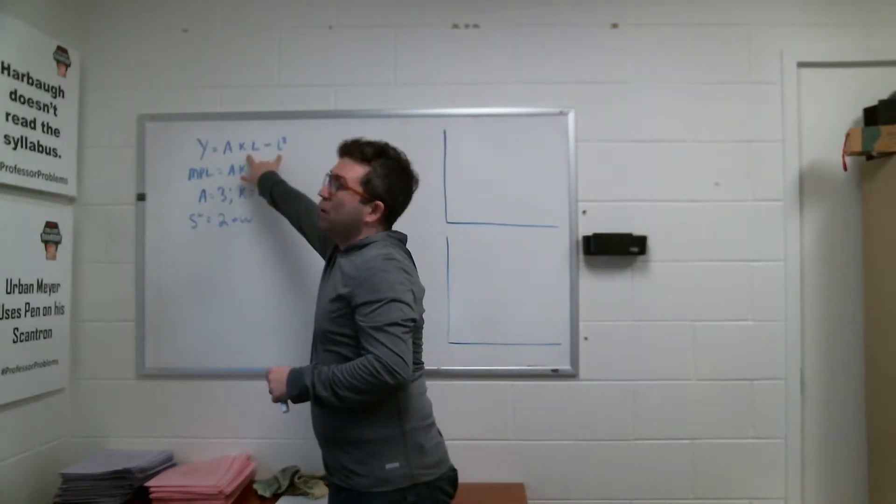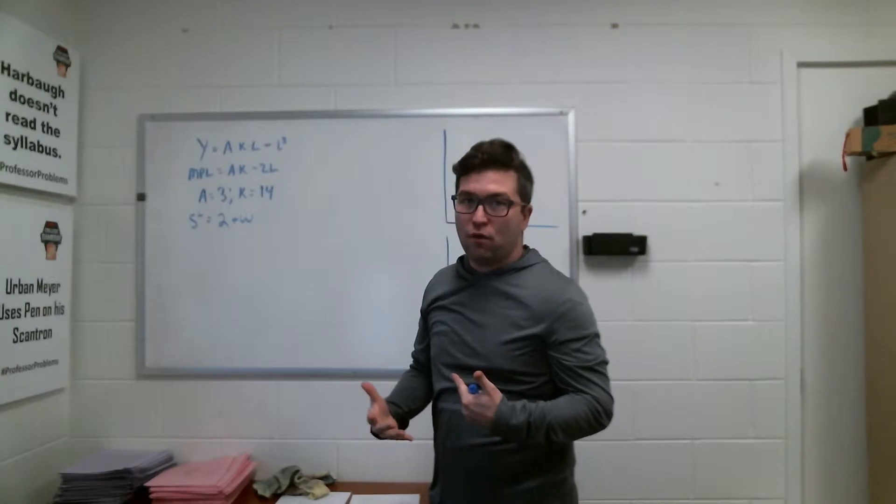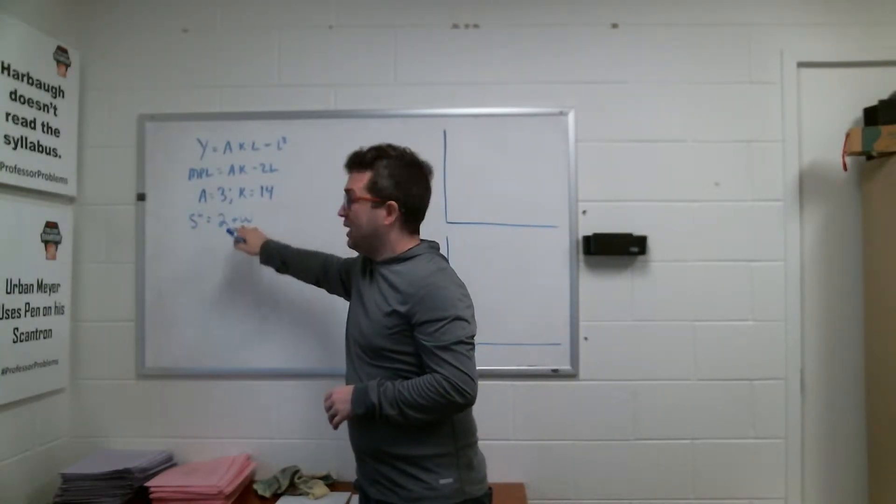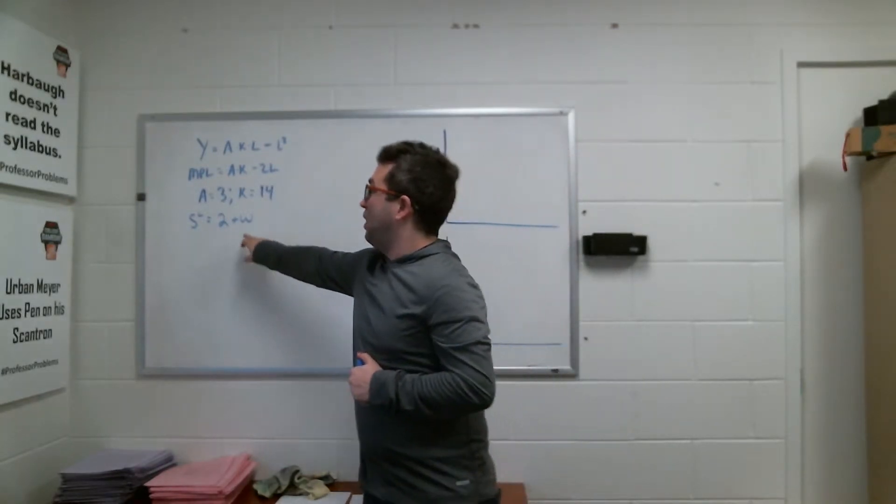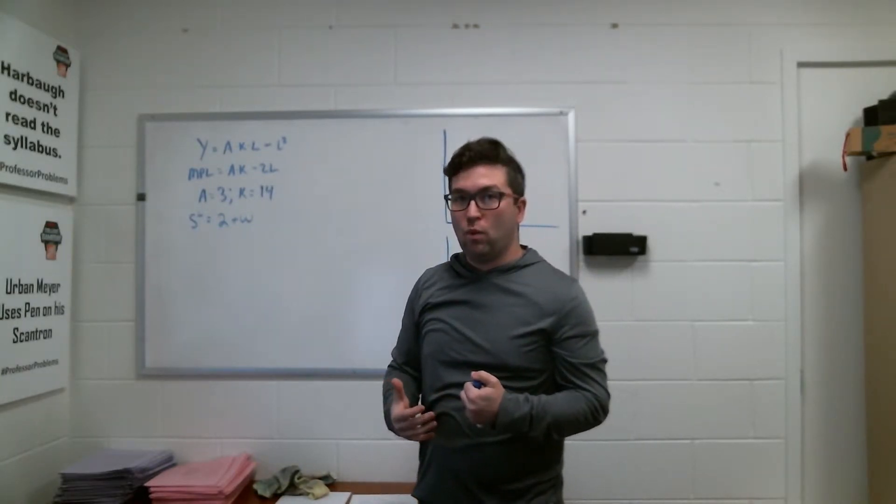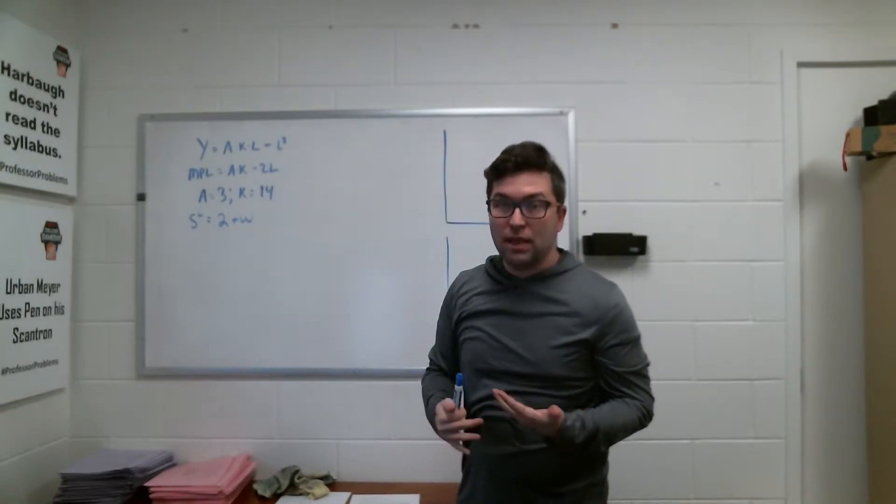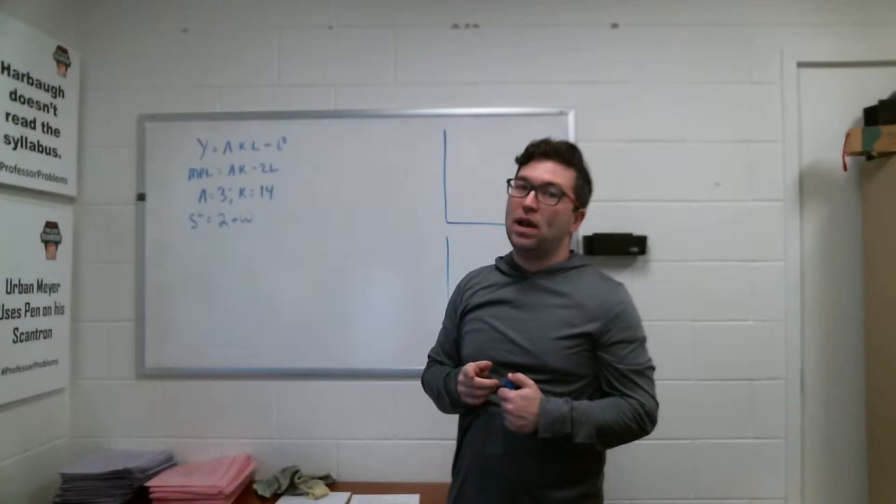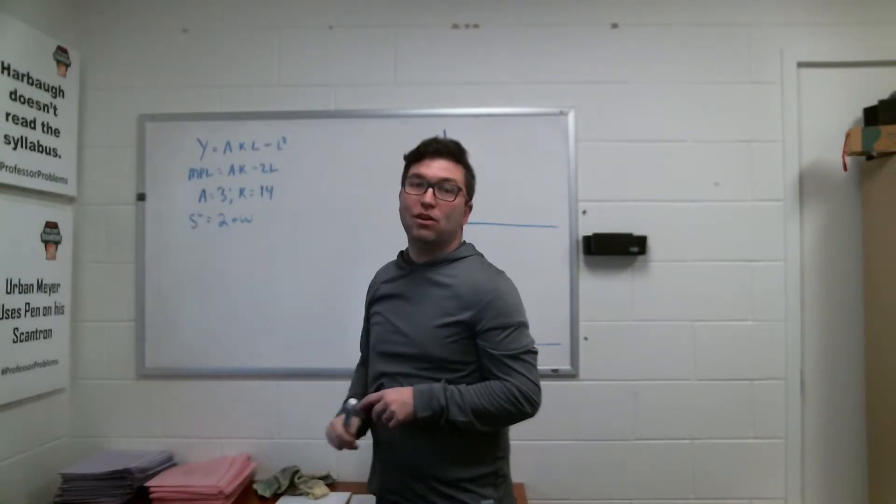If I were to hold capital and labor fixed, what else is there that can change my overall output? We're going to have capital, our capital stock is fixed at 14, and we're also given a supply of labor function. Please note that this supply of labor function is only showing a positive relationship between the real wage and the supply of labor. What that means is we have an upward sloping labor supply function, and the substitution effect will always be outweighing the income effect with the level of workers we're going to be looking at for this problem.